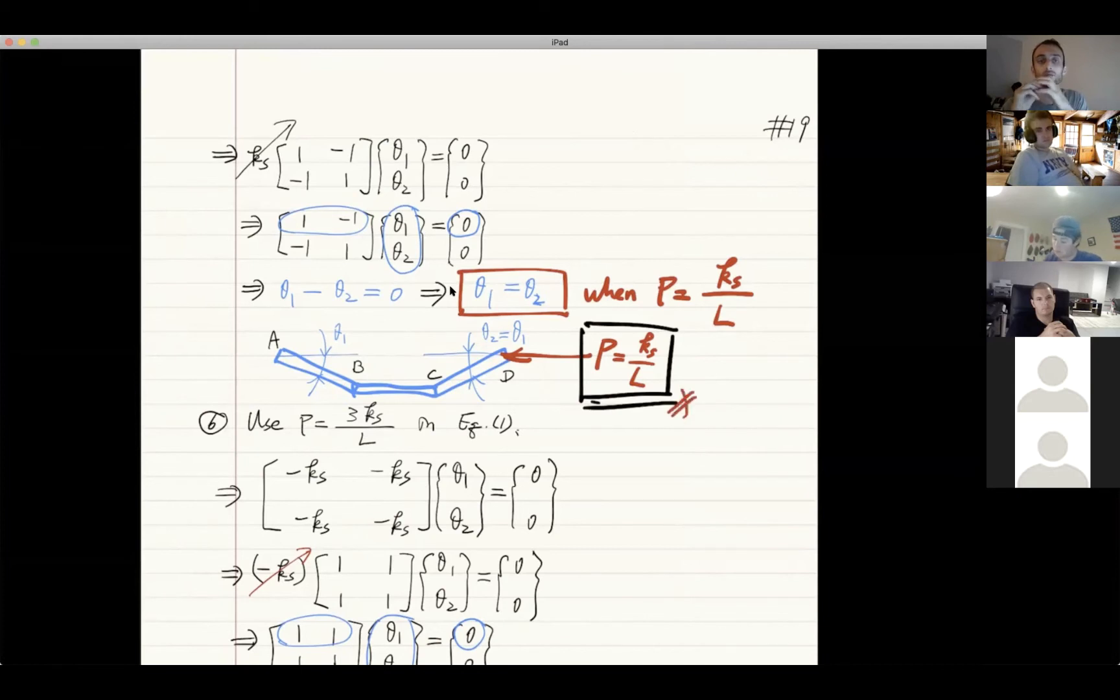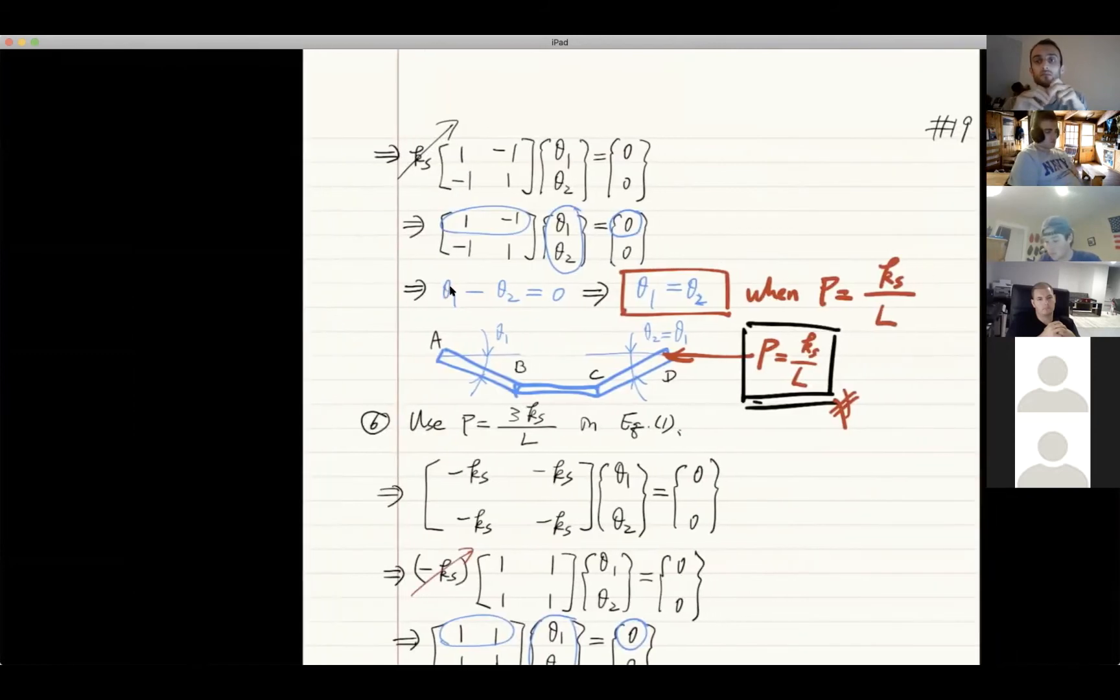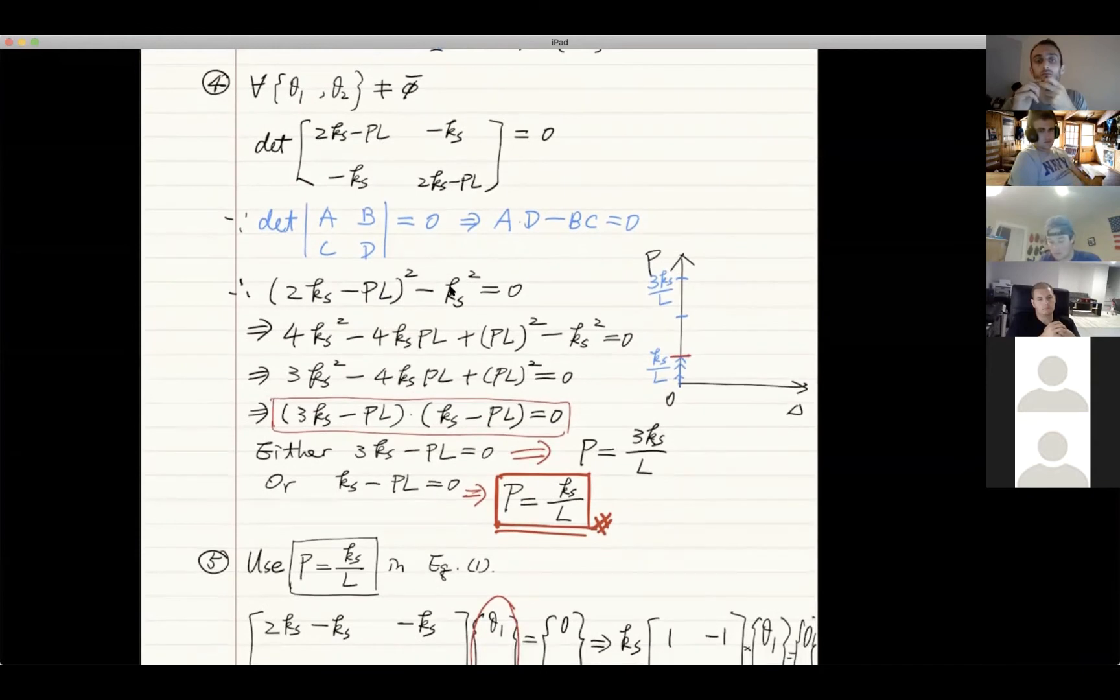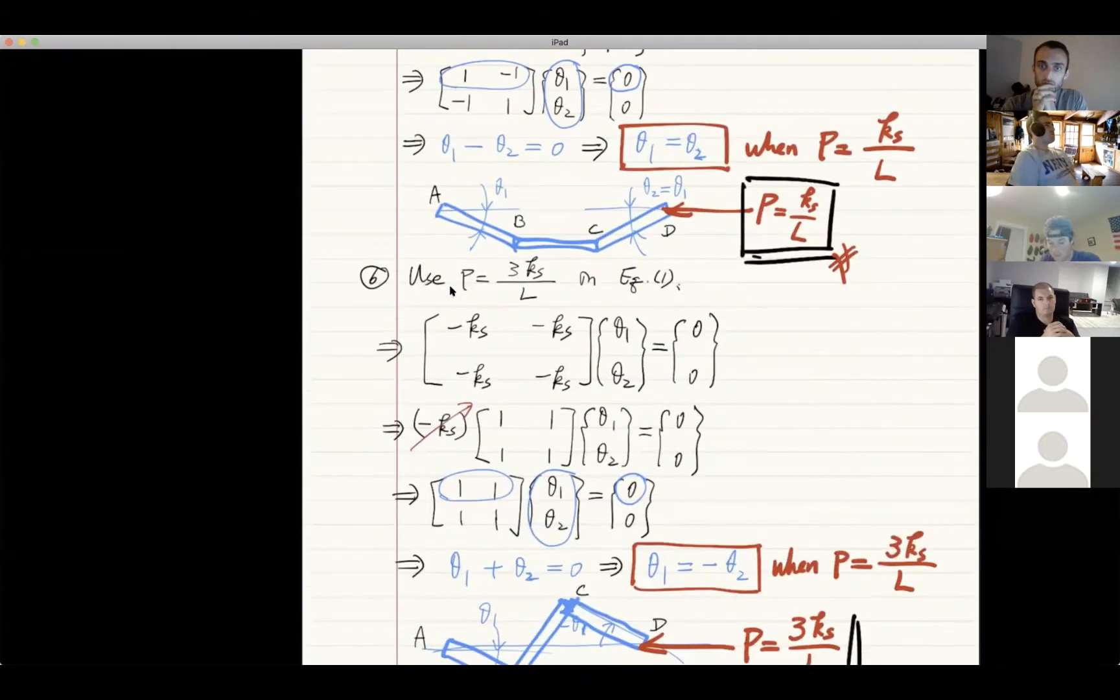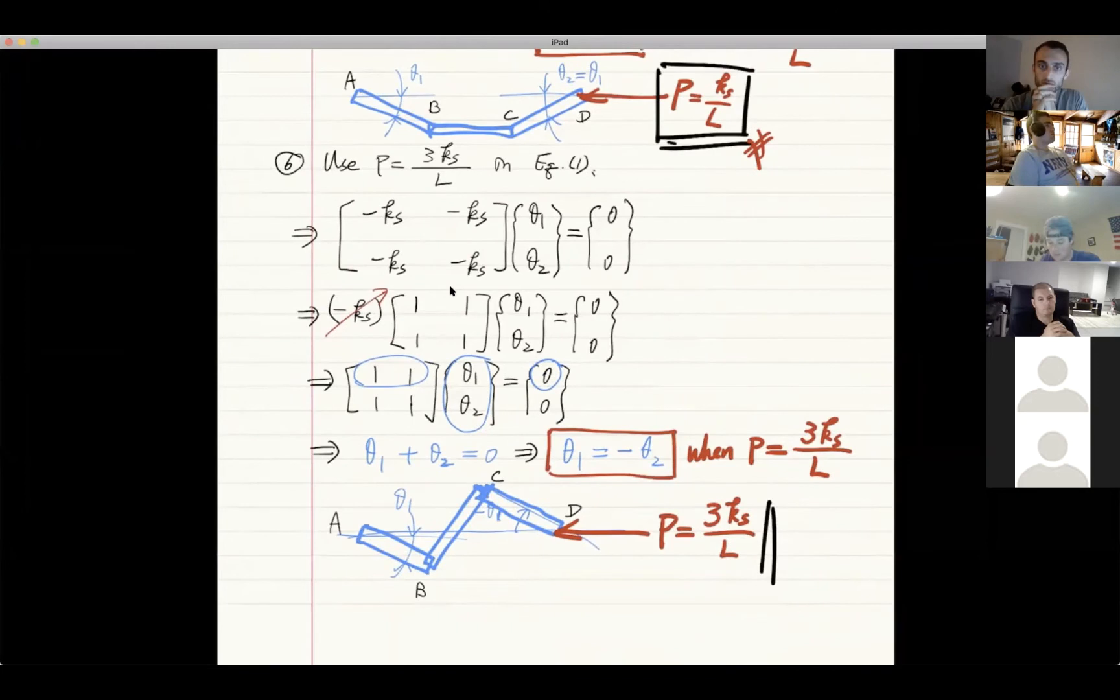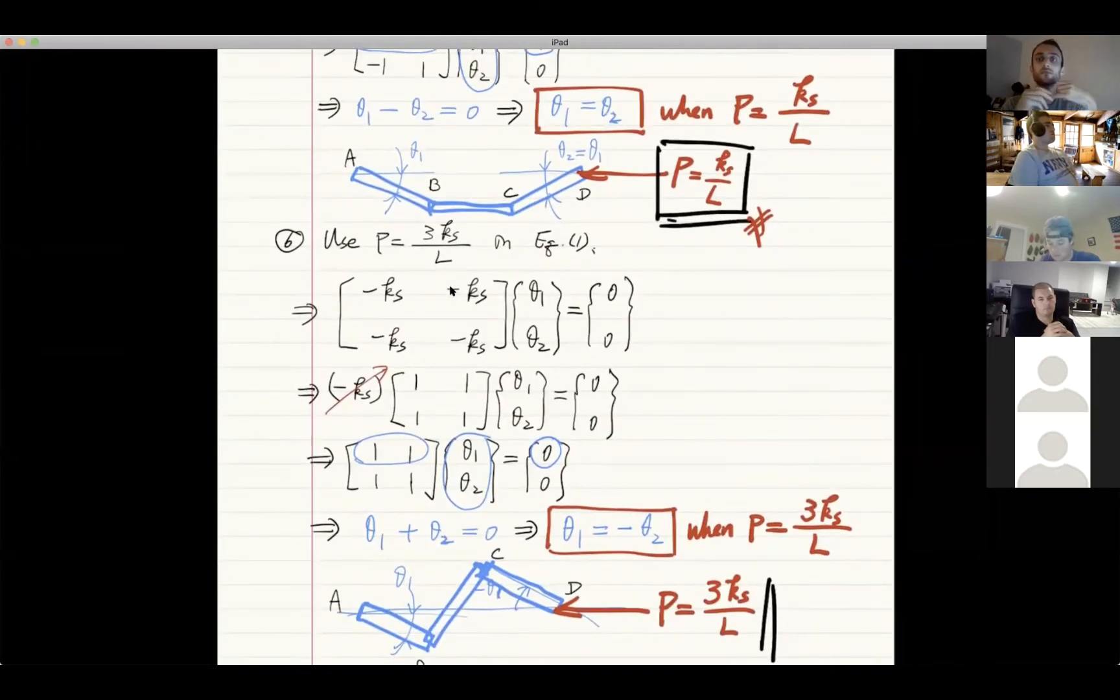Even if we applied the larger critical P all at one time, it would still try to buckle. You will not move to this higher value. When you start increasing load, the first value you're going to hit is the lower value for the buckling mode, which is ks over l. That means before you predict that the structure can buckle in this kind of shape, you will already buckle in the lower mode.